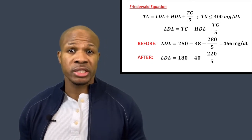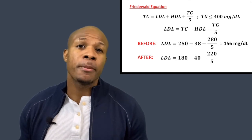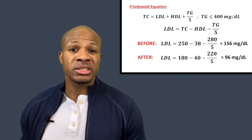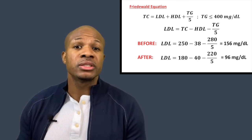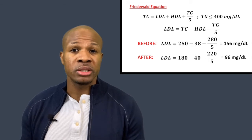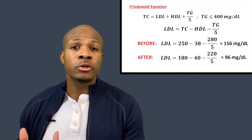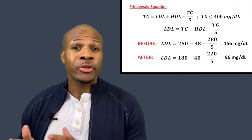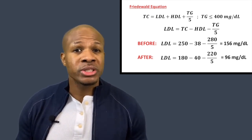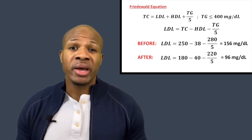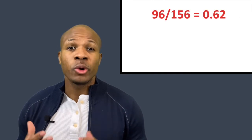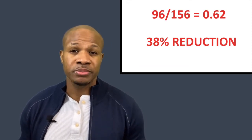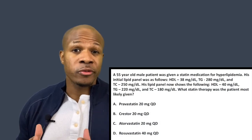That was the patient's initial LDL before the statin. Now for the LDL after: 180 minus 40 minus 220 divided by 5 equals 96 mg/dL. So statin therapy reduced LDL from 156 to 96. High-intensity statins reduce LDL by more than 50%, moderate intensity by 30–50%, and low intensity by less than 30%. Since 96 divided by 156 is 0.62, that's a 38% reduction — falling into the moderate intensity range.